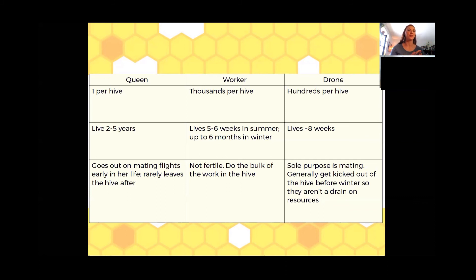And then you have the foragers — those are the ones you're going to meet outside in the garden. They are working very, very hard in the summer, so their lifespan is greatly reduced to five to six weeks. The bees will change their roles over their lifespan, starting by taking care of the brood, with foraging being usually their last job.